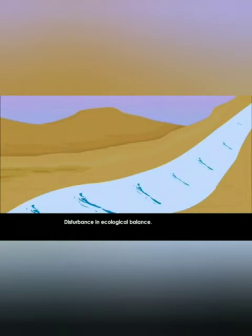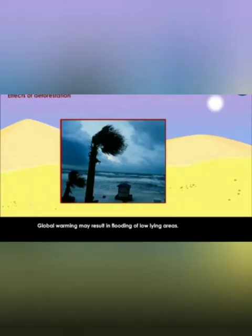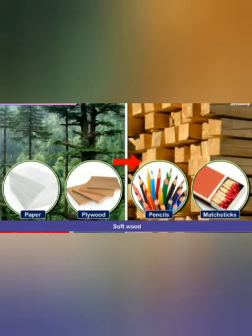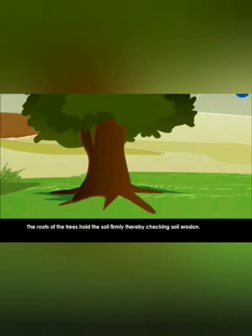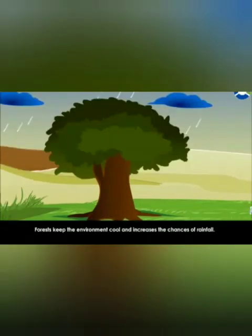Natural floods are occurring and storms are also coming. While plants give us a lot of things — they give us honey and resin, and their roots hold the earth and prevent soil erosion. They also attract rainfall.